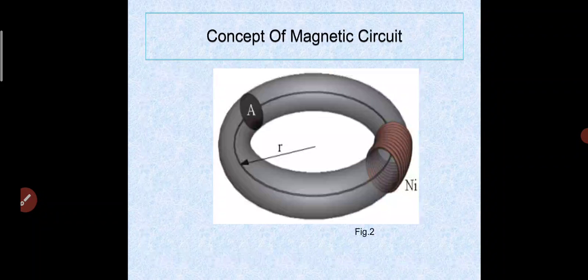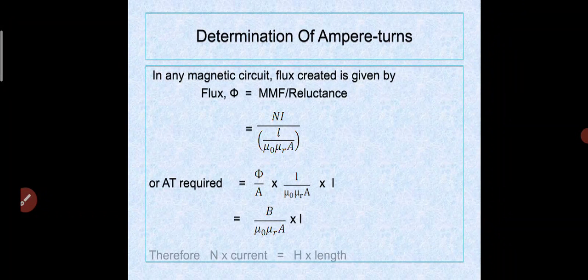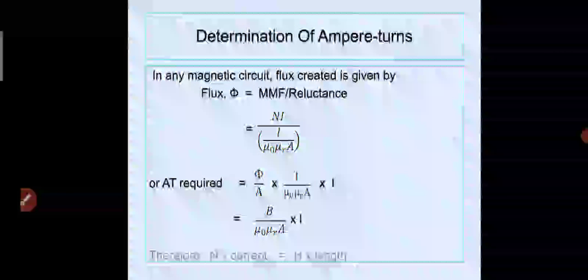Concept of magnetic circuit — this is the core radius, N·I is the number of turns times current. Determination of ampere turns. In any magnetic circuit, flux created is given by: flux phi equals MMF divided by reluctance.